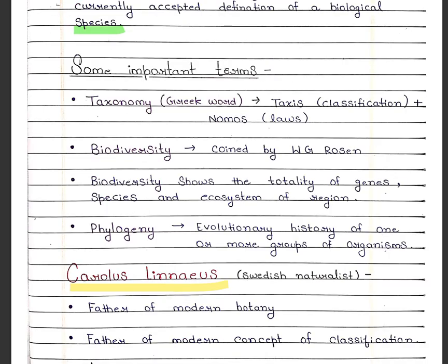Some important terms mentioned in this chapter are: Taxonomy. Taxonomy is the process of classifying all living organisms. It is made up of two Greek words — Taxis and Nomos. Taxis means classification and Nomos means law.